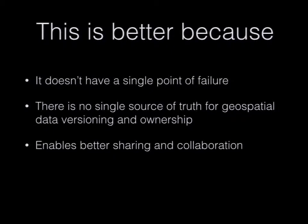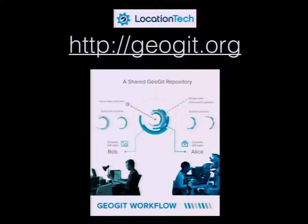These aspects result in a better model for sharing and collaboration on spatial information. Our approach to these problems is a project called GeoGit. It's an open source project with a BSD license, built in Java. There's a lot of documentation, tutorials, and workshops available. It is part of the Location Tech Working Group for the Eclipse Foundation, which we're really excited about. The intention is to provide a tool in a vendor-neutral space, and we'd like to see this concept grow with different implementations on top of different software.